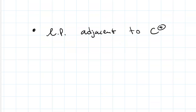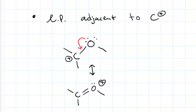Another resonance pattern is to have a lone pair adjacent to a carbocation. For instance, here we've got an oxygen adjacent to a carbocation. In this case, you can have one curved arrow that turns that lone pair into a pi bond. By moving the electrons from oxygen toward carbon, we've moved the positive charge from the carbon to the oxygen. In general, your curved arrow will always begin on a lone pair and end on a sigma bond creating a pi bond, and it's always a single curved arrow in this pattern.